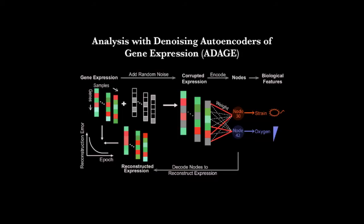The approach that we developed to solve this problem is called Analysis with Denoising Autoencoders of Gene Expression, or ADDGE for short. ADDGE starts with gene expression data that has not been corrupted. We then add noise to the data. In this case we've started with really noisy data and we've added more noise to it, but the next step is that we train a neural network to remove the noise that we added so we can get the original data back.